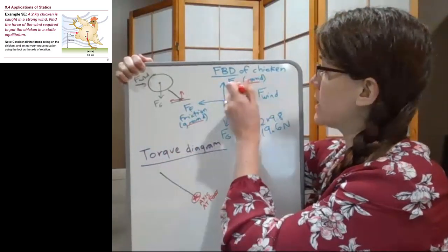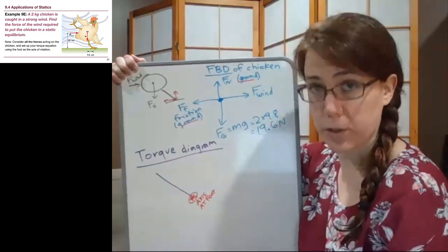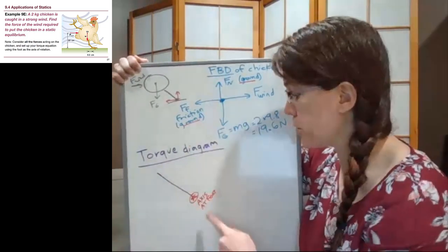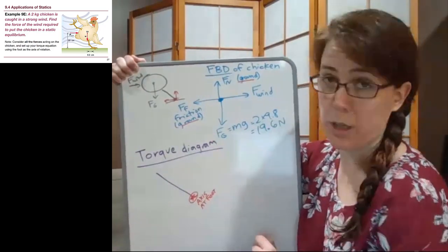Because now instead of four forces that we have to include in our torque diagram, this one is acting at the ground and this one is acting at the ground, and so neither of those will have to be torque terms. It makes our math as simple as possible to choose the axis at the location with multiple unknown forces.